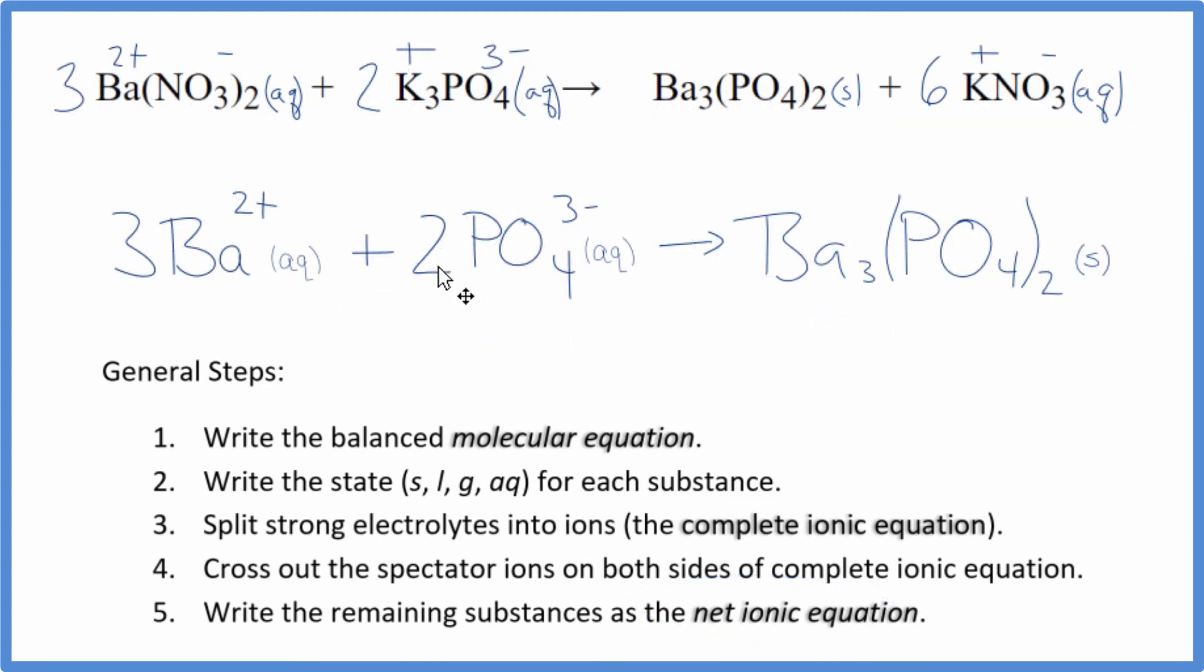So this is the balanced net ionic equation for Ba(NO3)2 plus K3PO4. You'll note that charge is conserved. I have three times two plus. That's six plus. And here I have two times three minus. That's six minus. Six plus, six minus. Net charge of zero. This is neutral. Net charge of zero. If you count the atoms up, they're balanced as well. This is Dr. B with the balanced net ionic equation for barium nitrate plus potassium phosphate. Thanks for watching.